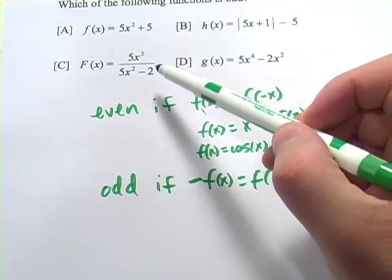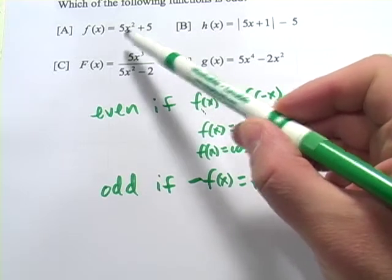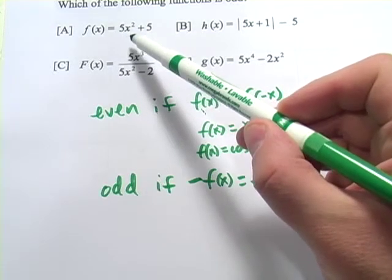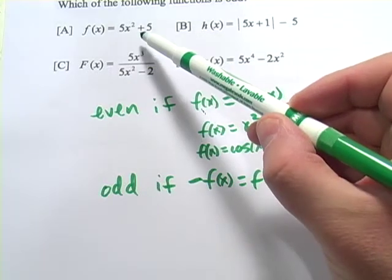So let's take a look at these first of all. f of x equals 5x squared plus 5. To me, I would suspect that's even. And the question is asking us to find an odd function. So I probably wouldn't test that one first.